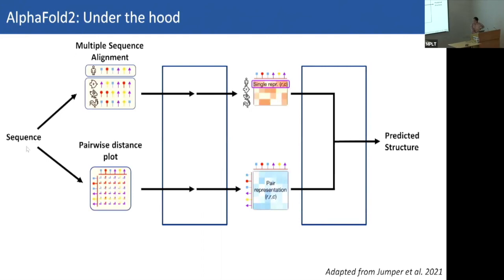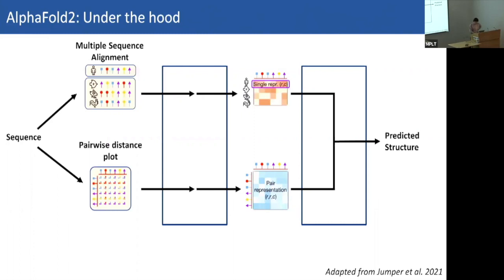Under the hood, you enter your sequence and AlphaFold generates two representations: the first is a multiple sequence alignment — it pulls related proteins and measures homology to your input sequence. The second is a pairwise distance plot, which is a distance plot between all pairs of residues in your input sequence, which is why it's two-dimensional. Additionally, it can look for PDB templates, which can help your prediction.